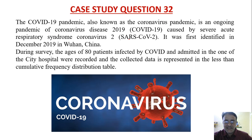COVID-19 is caused by severe acute respiratory syndrome coronavirus 2, SARS-CoV-2. It was first identified in December 2019 last year in Wuhan, China. During a survey, the ages of 80 patients infected by COVID and admitted in one of the city hospitals were recorded, and the collected data is represented in the less than cumulative frequency distribution table.